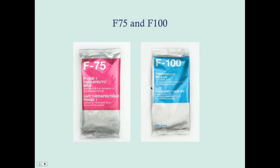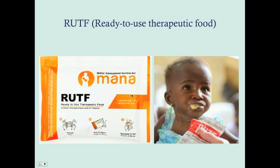The F packets are just mixed in water or milk — follow the instructions. The ready-to-use food requires no mixing at all — you shake it, cut it open, squeeze, and eat. This may be easier for some populations where they don't have glasses or a safe water source.